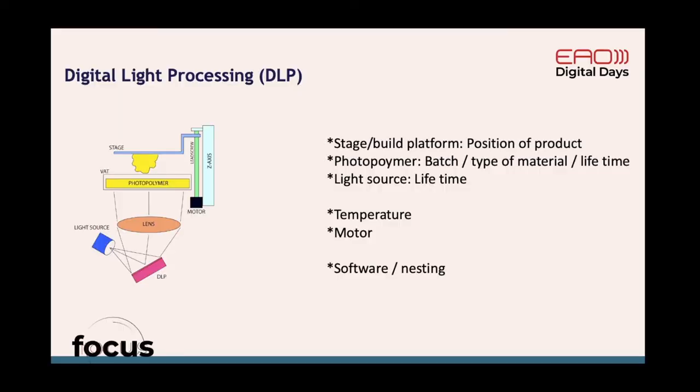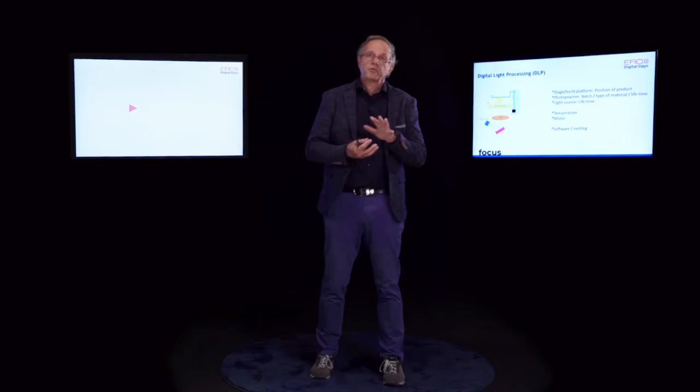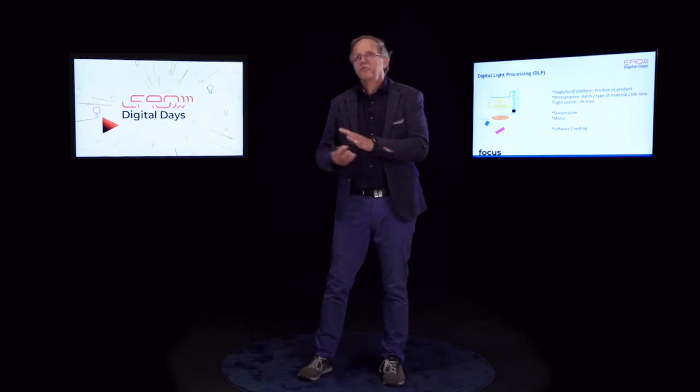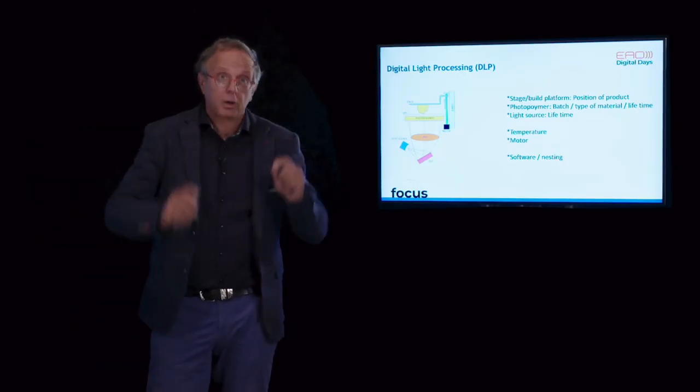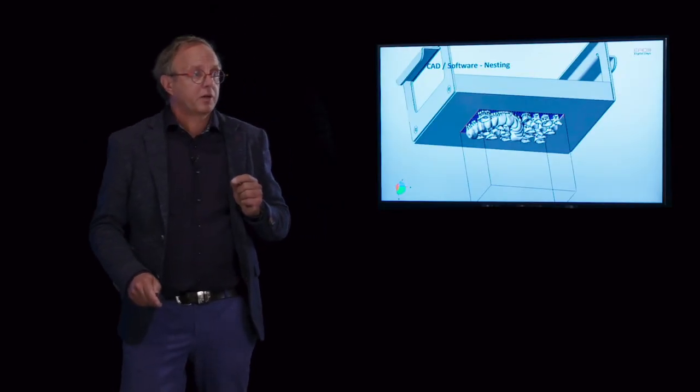The photopolymer bath — the material itself, the batch, the lifetime of the material, how old it is — all has an influence on quality. This means you have to continuously calibrate your machine to the material you're using. Your light source has a limited lifetime, and during that lifetime the light intensity and frequency may change slightly, affecting precision. Temperature, the speed of the motor, and the software all have influence on what you're making and ultimately on the quality of the end product.